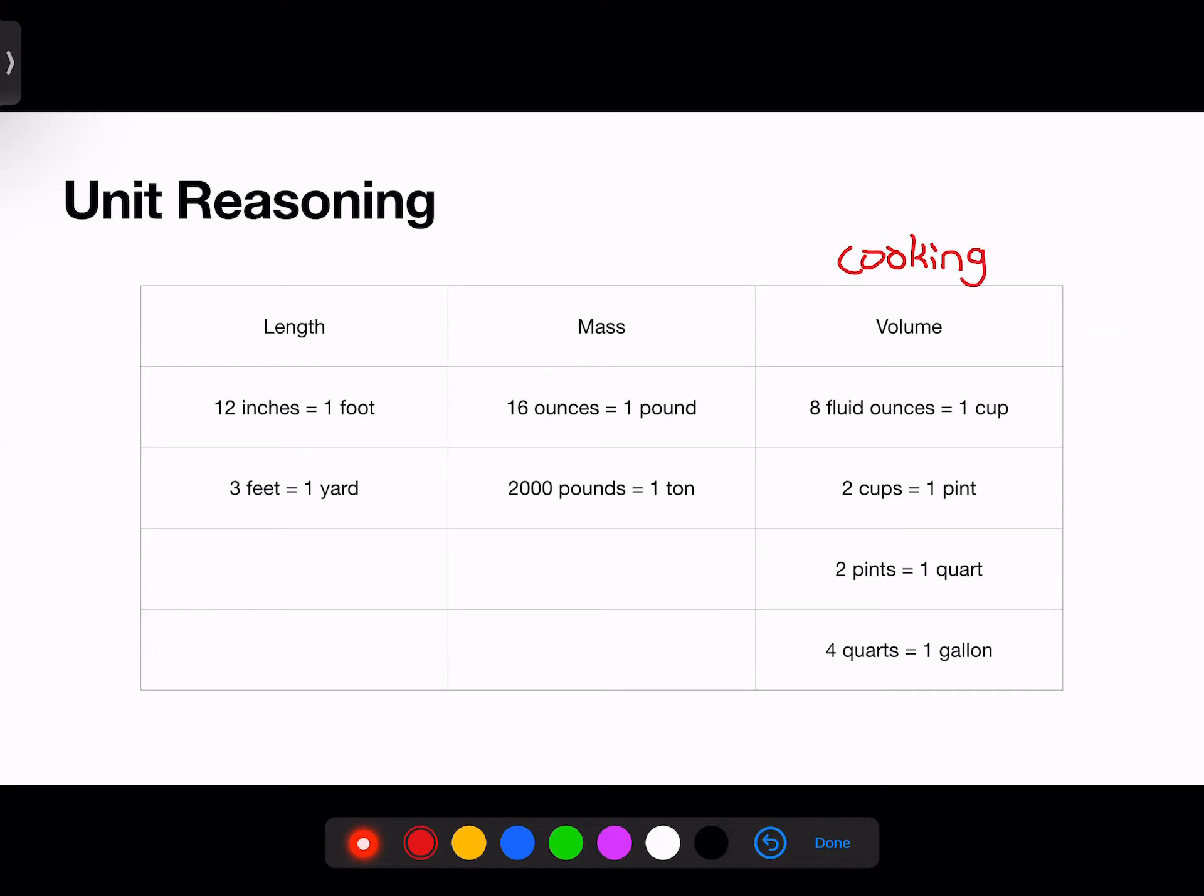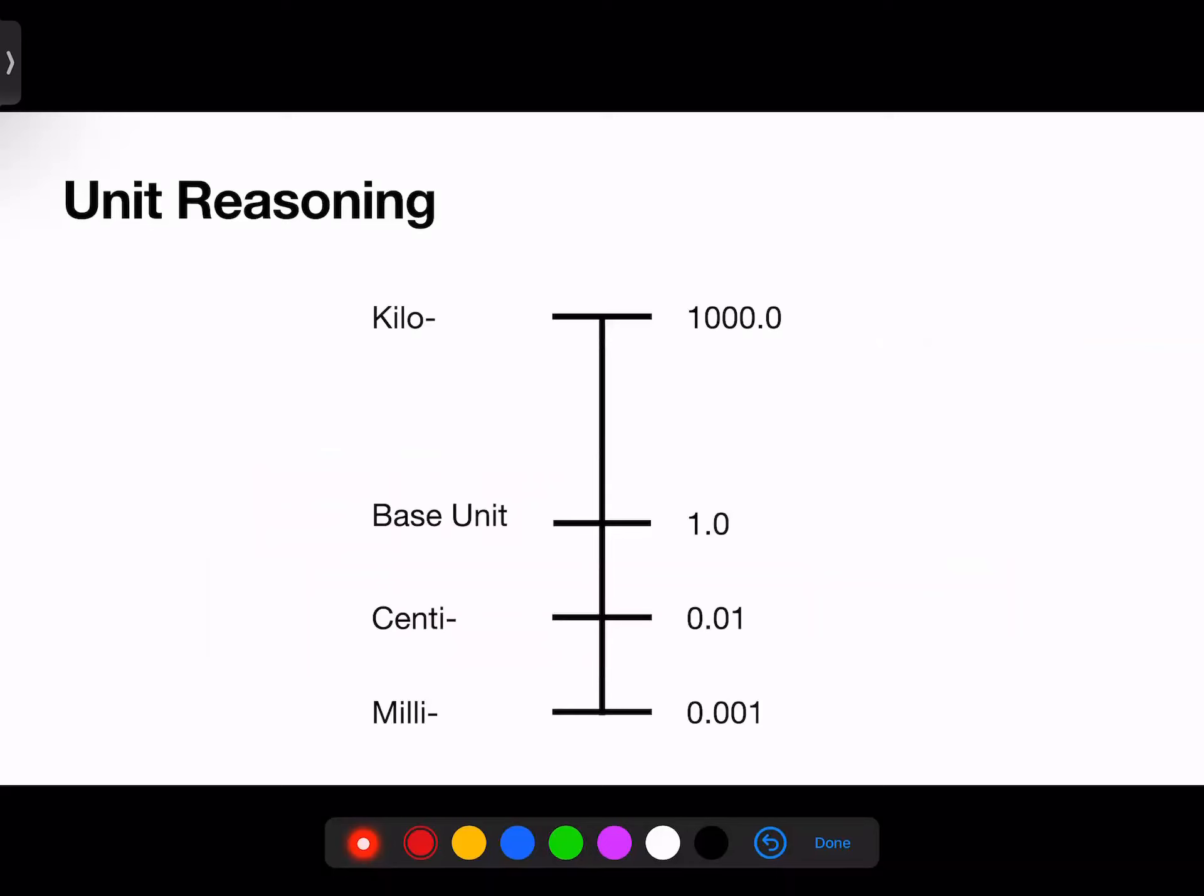For the metric system, the conversion rate is much easier. The Latin prefix at the beginning of each word refers to how large the unit is. Kilo means 1,000 times the base unit. Centi means 1 hundredth of the base unit. And milli means 1,000th of the base unit.